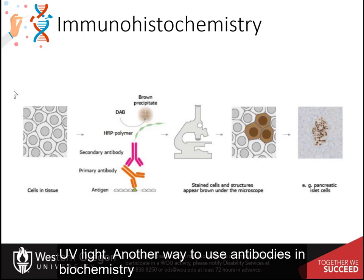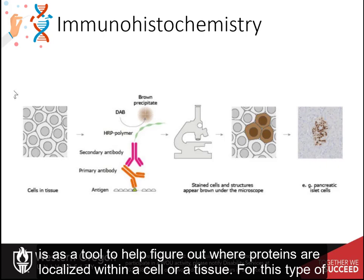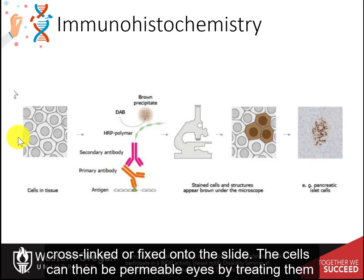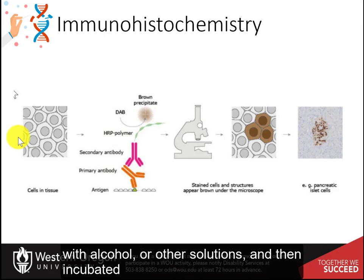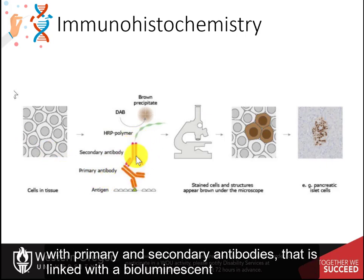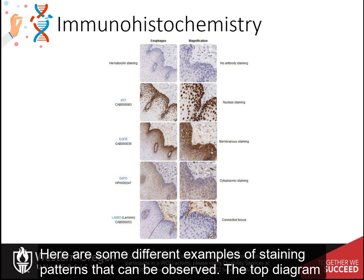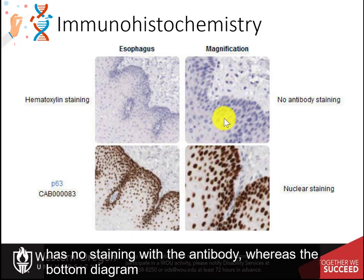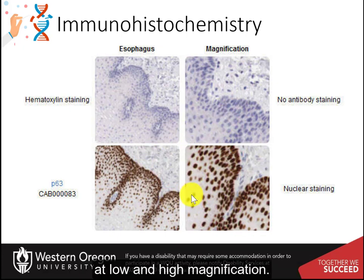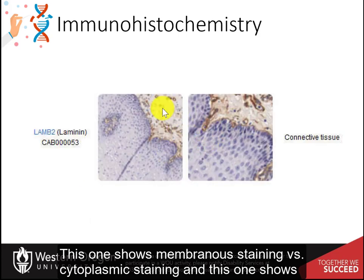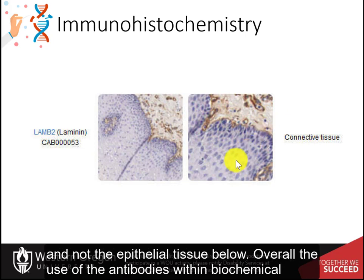Another way to use antibodies in biochemistry is as a tool to help figure out where proteins are localized within a cell or a tissue. For this type of analysis, very thin slices of tissue are prepared and mounted onto glass slides where they are cross-linked or fixed. The cells can then be permeabilized by treating them with alcohol or other solutions, and then incubated with primary and secondary antibodies linked with a bioluminescent or chemiluminescent marker. The samples are then visualized microscopically. Different staining patterns can be observed: no staining, nuclear staining at low and high magnification, membranous staining, cytoplasmic staining, or differential staining with only the connective tissue and not the epithelial tissue below.